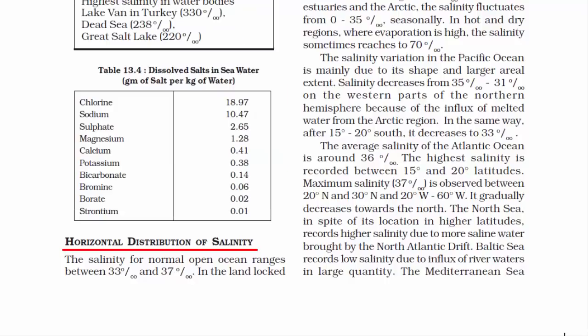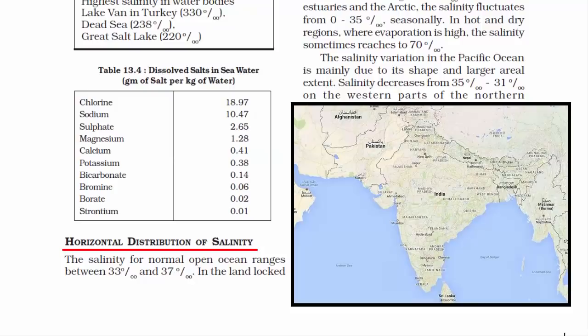Looking at the Indian Ocean, the Bay of Bengal shows a low salinity trend due to the influx of river water from the Ganga, and most Indian rivers drain into the Bay of Bengal. On the other hand, the Arabian Sea shows higher salinity due to high evaporation and low influx of fresh water.